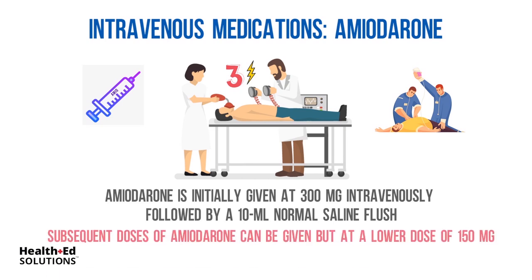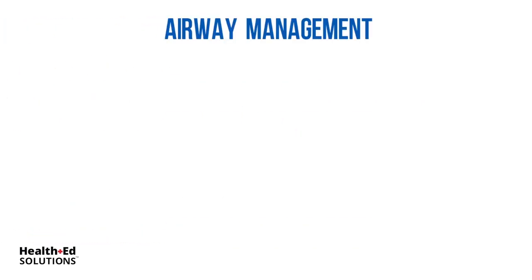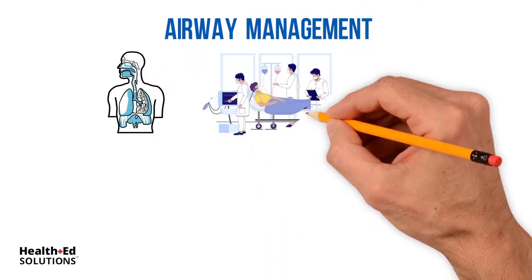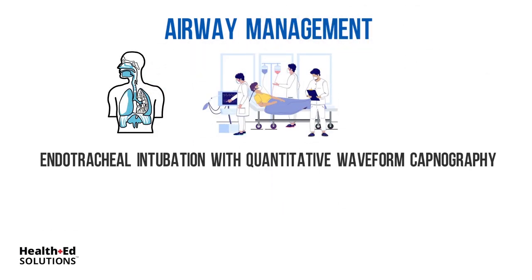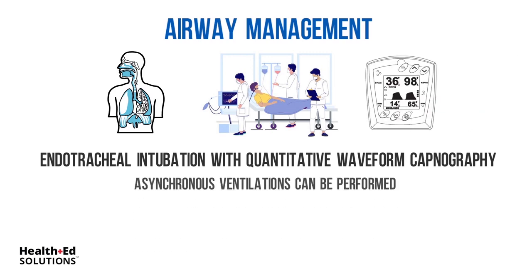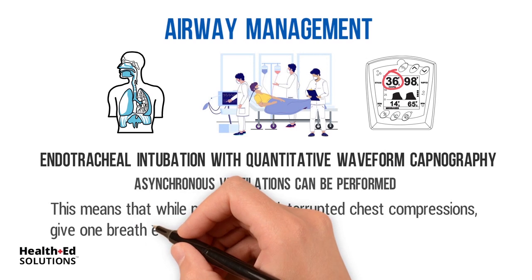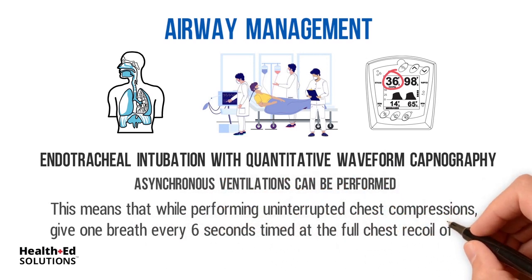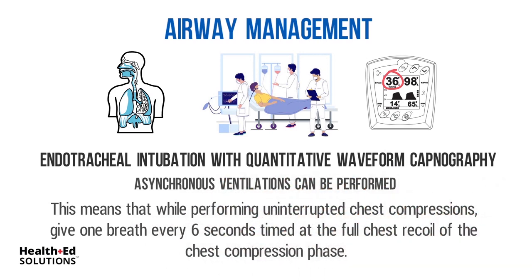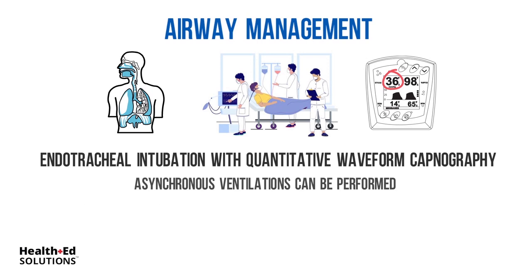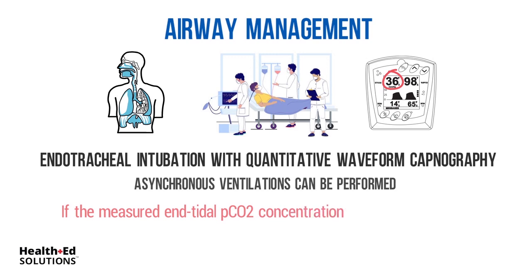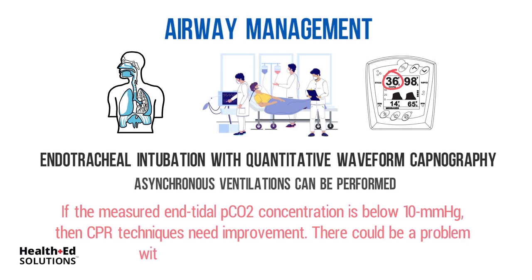Subsequent doses of amiodarone can be given at a lower dose of 150 milligrams. Airway management: consider inserting an advanced airway such as endotracheal intubation with quantitative waveform capnography. Once the endotracheal tube is inserted, asynchronous ventilations can be performed — give one breath every six seconds timed at full chest recoil, while chest compressions continue uninterrupted. Quantitative waveform capnography can assess CPR quality; if the end-tidal CO₂ is below 10 mmHg, CPR technique needs improvement.